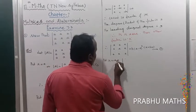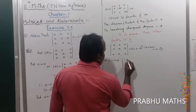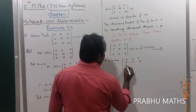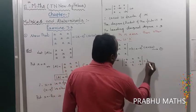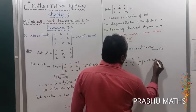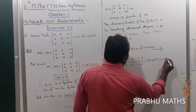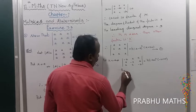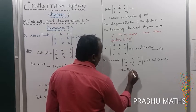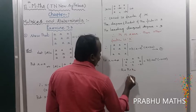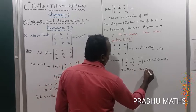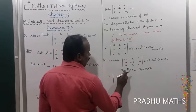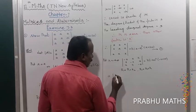Put x equal to minus a: the determinant of minus a a a / a minus a a / a a minus a equals k times (minus a minus a) whole square times (minus a plus 2a), that is k times (minus 2a)² times (a). Apply row operations r1 → r1 + r2, r3 → r3 + r1.